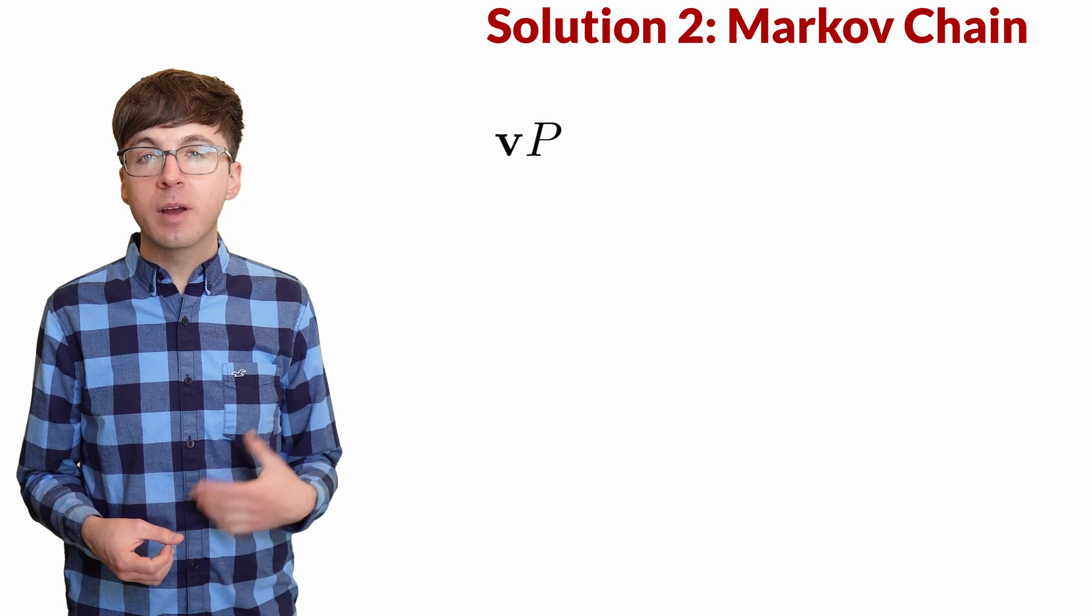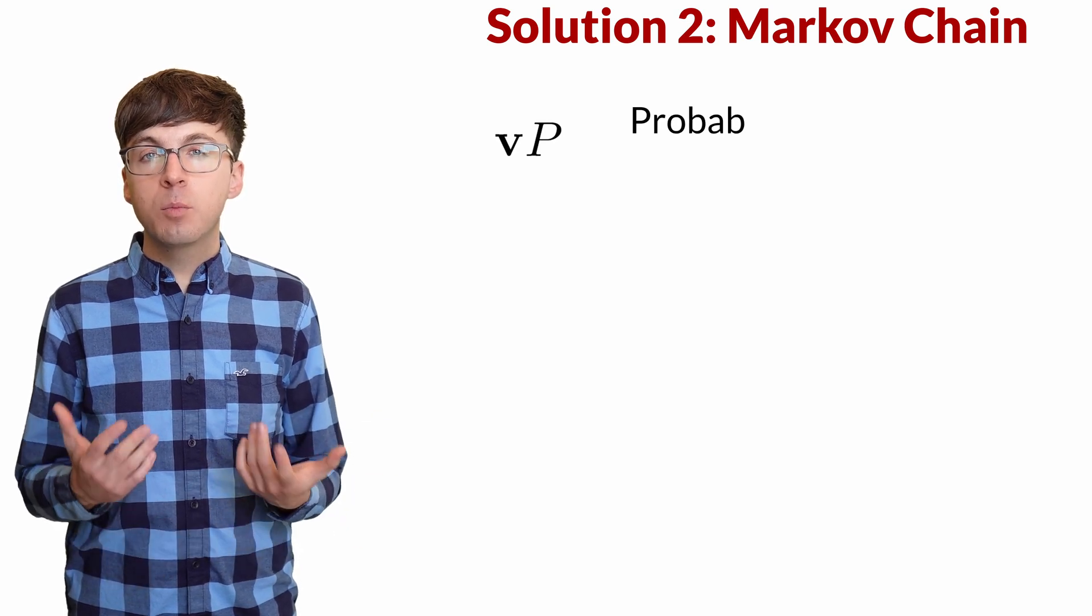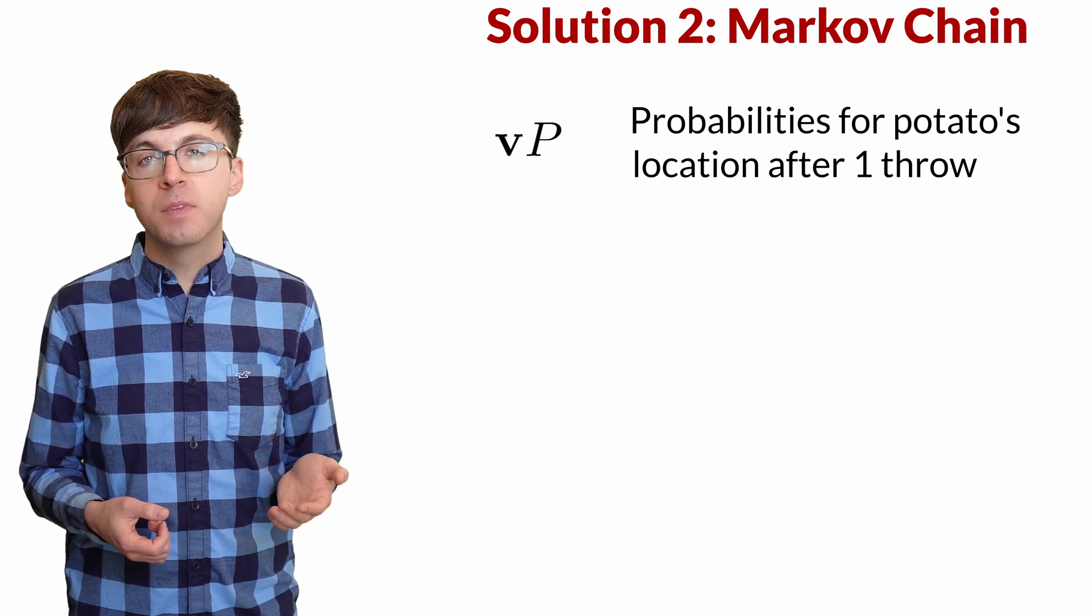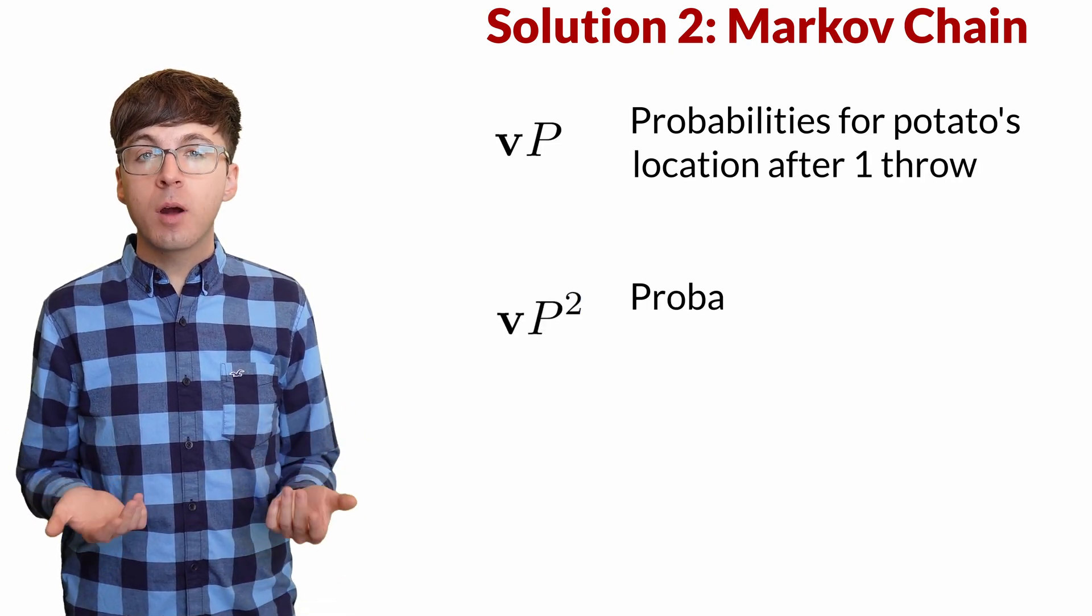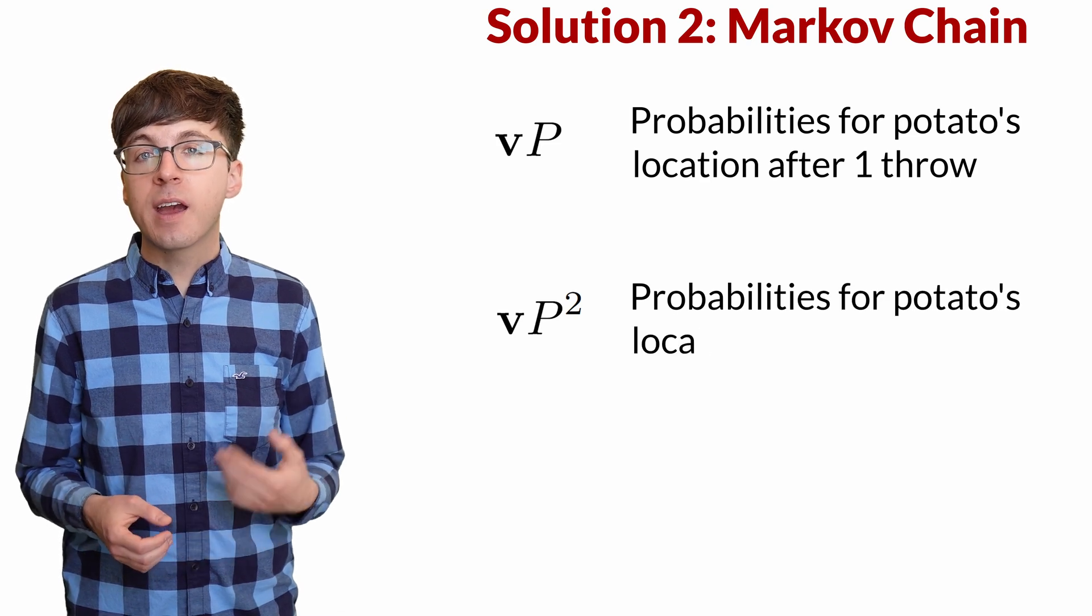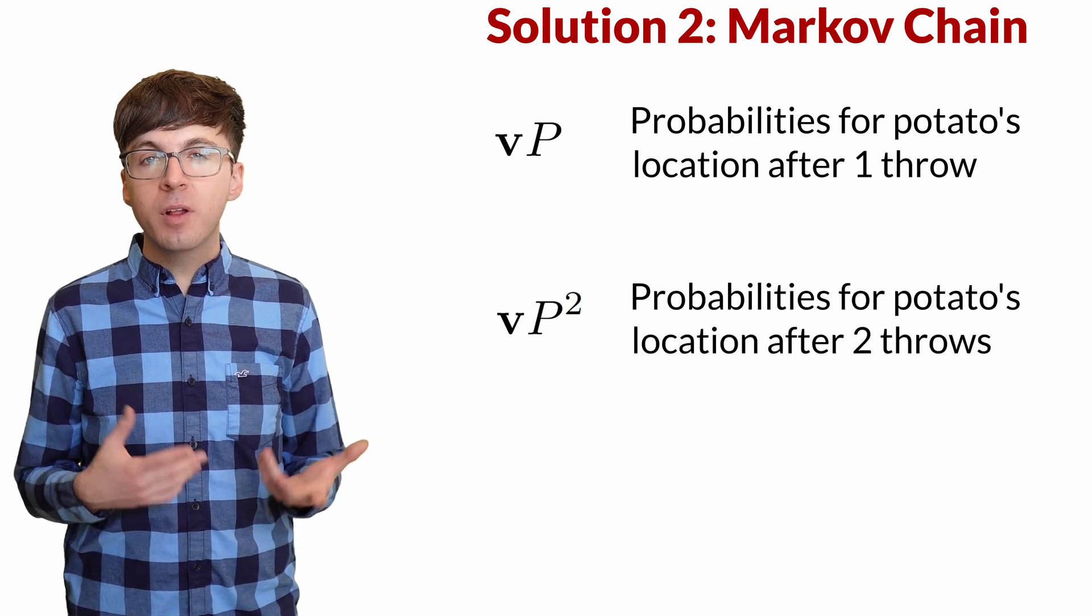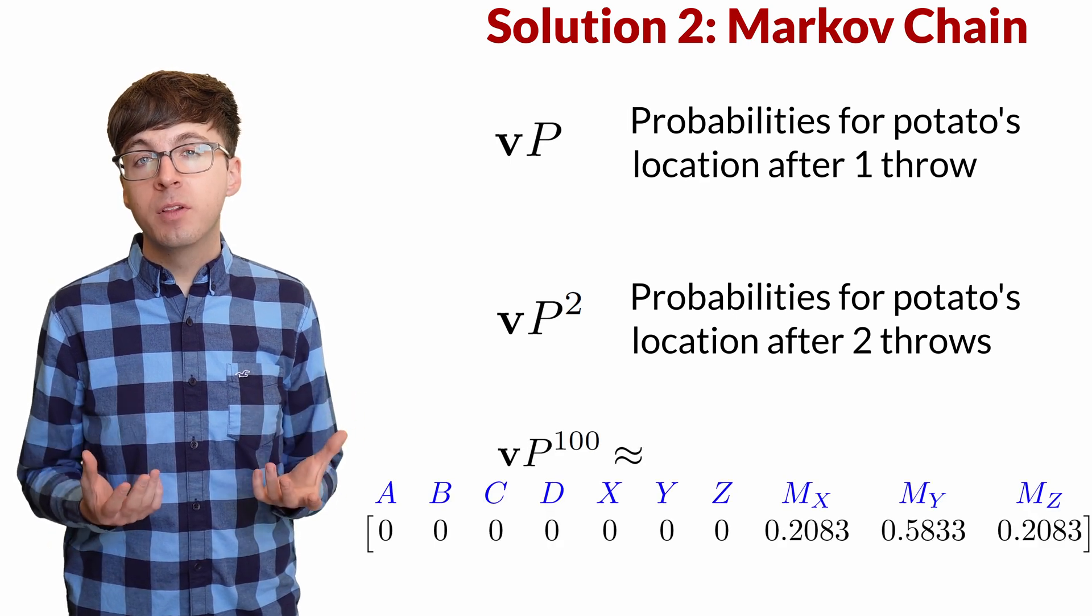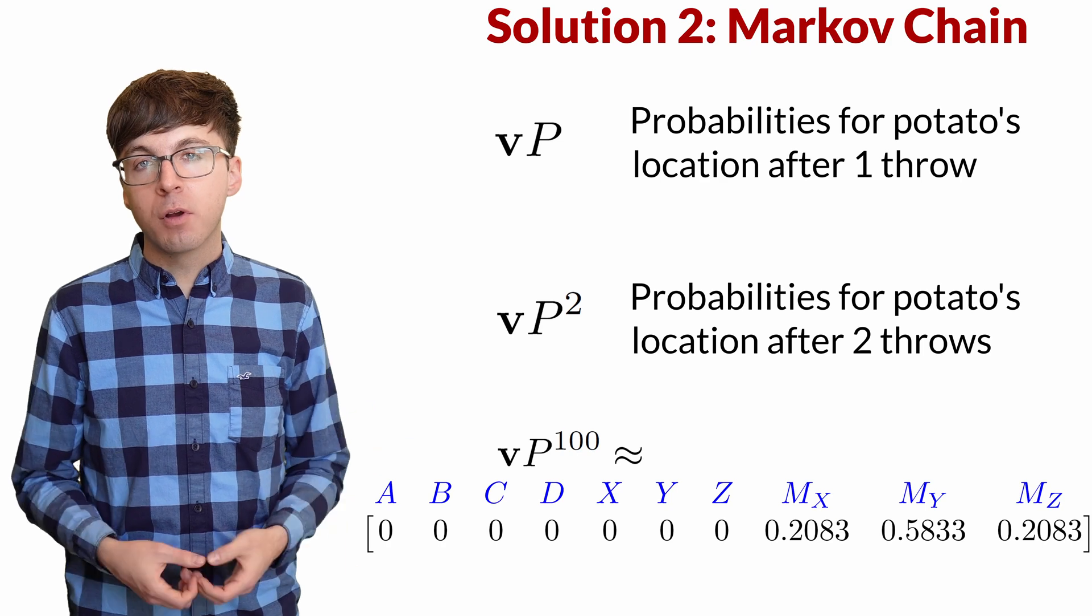If we multiply this starting vector by the transition matrix, this gives the probabilities for the potato's location after one throw. If we multiply by the matrix again, we get the probabilities of the potato's location after two throws. If we multiply the vector by the matrix 100 times, then we get the probabilities for where the potato is after 100 throws.